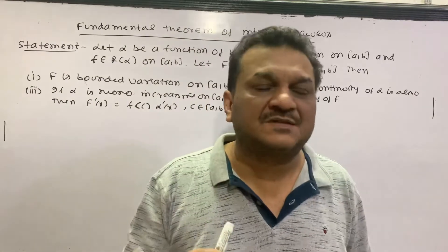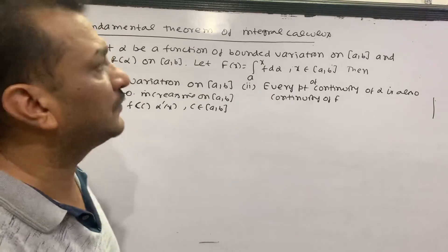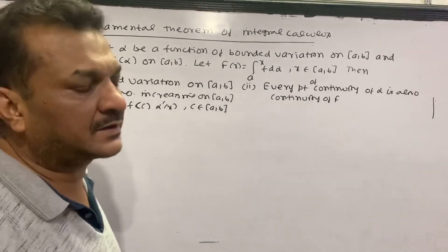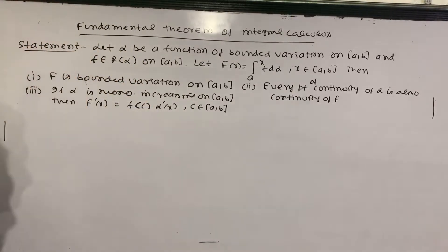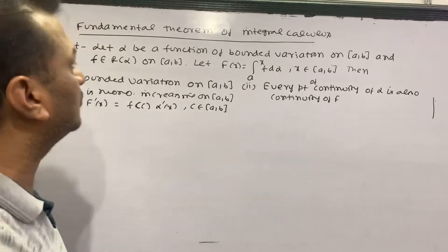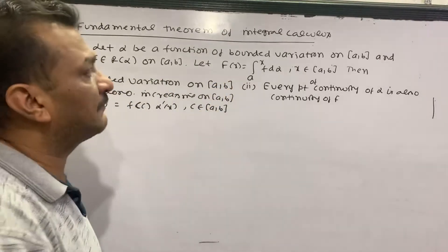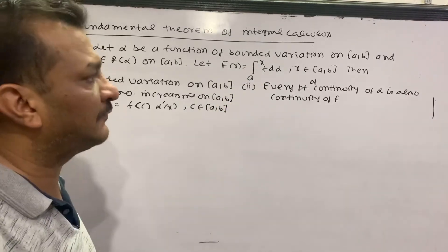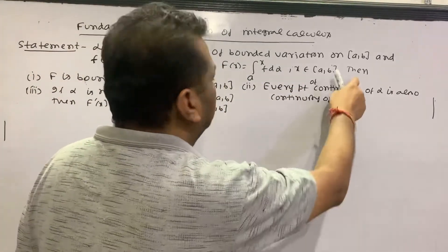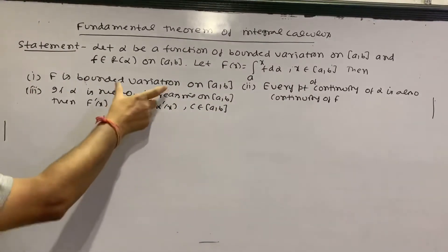Hello students. This is the Riemann-Stieltjes integral — a very important theorem, the Fundamental Theorem of Integral Calculus. Statement: let alpha be a function of bounded variation on the closed interval [a, b], and let f be Riemann-Stieltjes integrable with respect to alpha on [a, b]. Let capital F(x) equal the integral from a to x of f dα, where x belongs to the closed interval [a, b]. Then F is of bounded variation on [a, b].